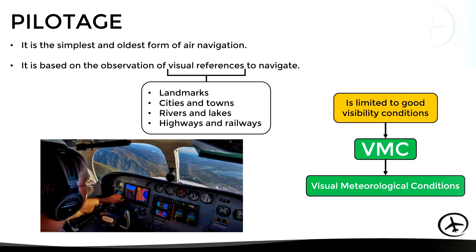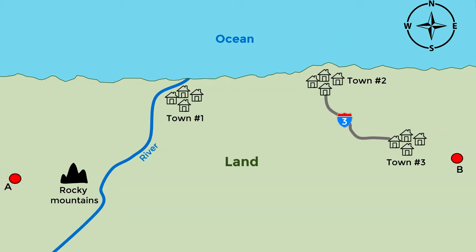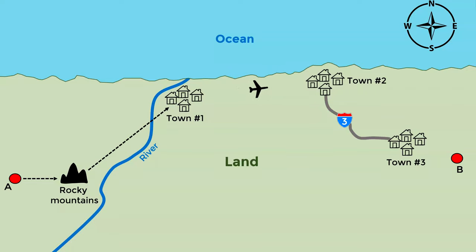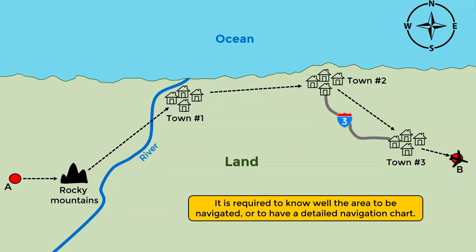Let's look at an example of pilotage navigation. Suppose an aircraft wants to fly from airport A to airport B, and in between there are several visual references that can be used by the pilot to orient himself and find his way to the destination. In this particular case, the aircraft takes off and flies to the east until it reaches these rocky mountains, where it turns to the northeast following the river, until it reaches town number one. Then it flies to the east following the shoreline until it reaches town number two, where it turns to the southeast following the highway until it reaches town number three, where the pilot sights airport B, and then proceeds to land.